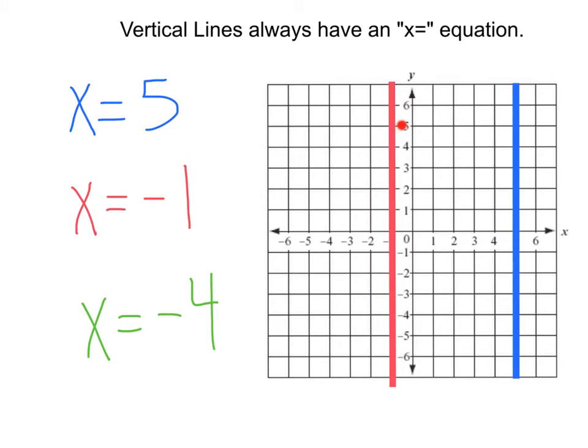boom, we got the same thing right there at x equals negative 1. Last, if we want x equals negative 4, bam, wouldn't you know, a vertical line at x equals negative 4.